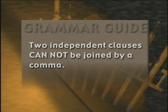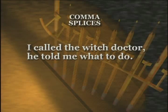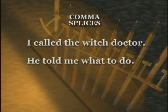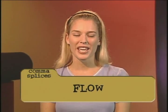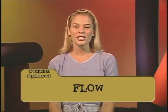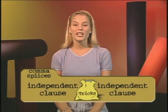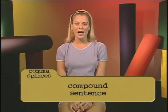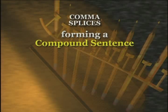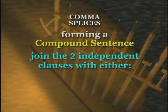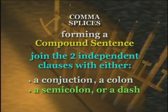Let's go over that again. Grammar guide: two independent clauses cannot be joined by a comma. However, you do have several options in fixing this. The easiest way is just to make them two separate sentences: "I called the witch doctor. He told me what to do." Not as exciting though — it just doesn't have that flow. So to keep that flow, let's reach into our bag of tricks. We can combine these independent clauses to form a compound sentence using either a conjunction, a colon, a semicolon, or a dash.